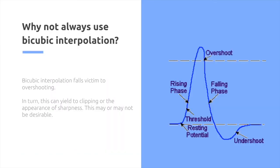So why not always use bicubic interpolation? Bicubic interpolation falls victim to overshooting. For example, we can see in this diagram that we can overshoot past a boundary range. Let's say we're doing RGB colors in an image for resizing. If we pass 255 for R, G, or B, then we're going to have to clip it at 255. So this can give some interesting results.